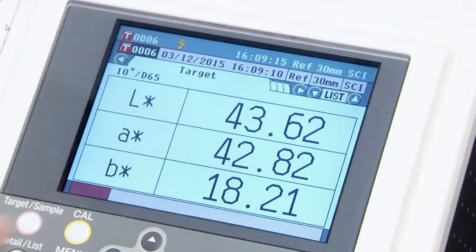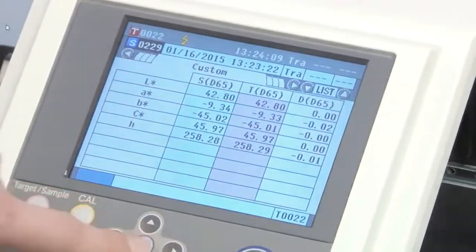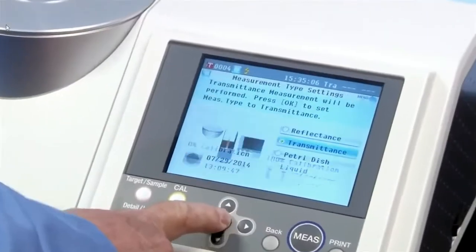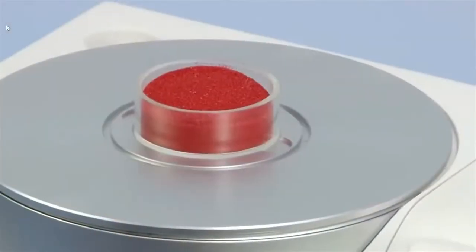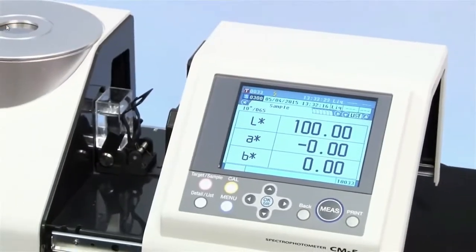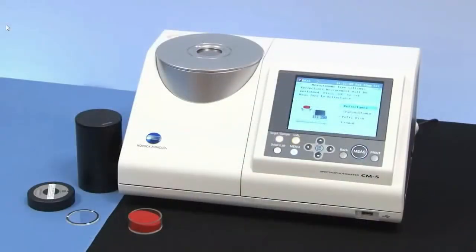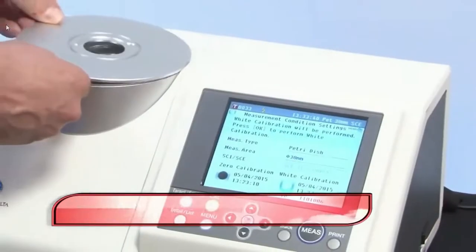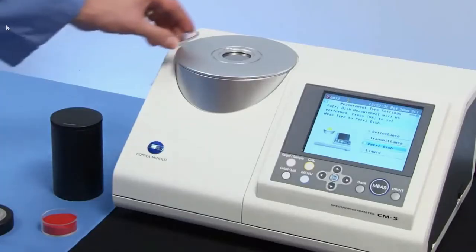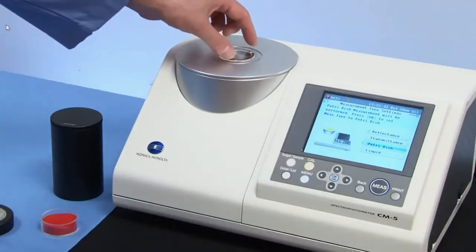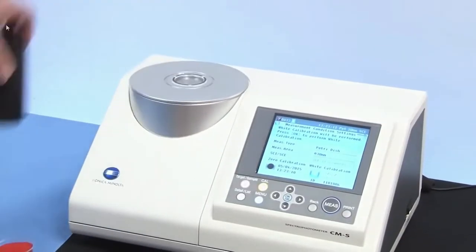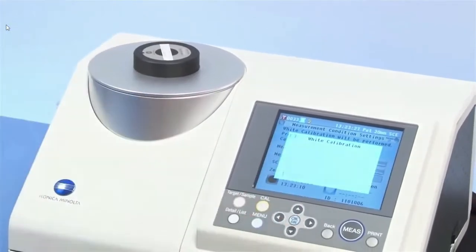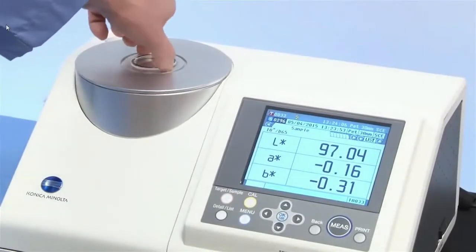Configure the CM5 to your measurement requirements including petri dish and liquid modes. To perform a reflectance measurement in petri dish mode, put the special target mask in place followed by the glass accessory piece. Perform zero calibration and then an external white calibration through the glass piece. This will normalize the instrument when measuring samples through a petri dish. Proceed to measure your targets and samples in reflectance mode as normal.